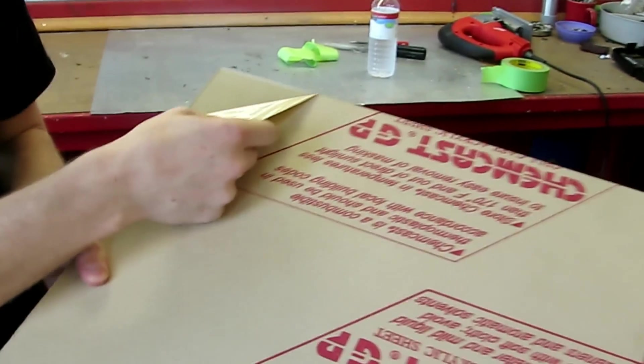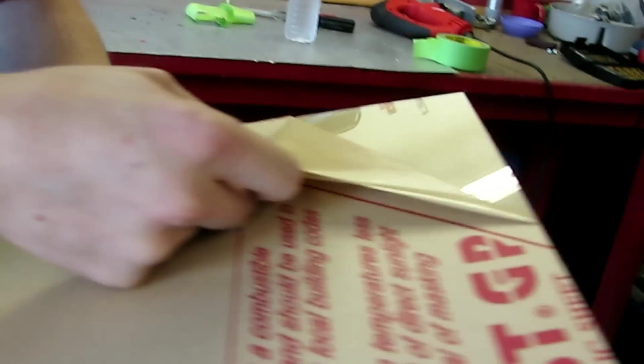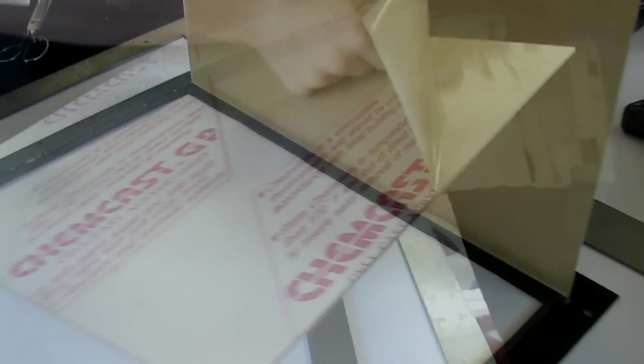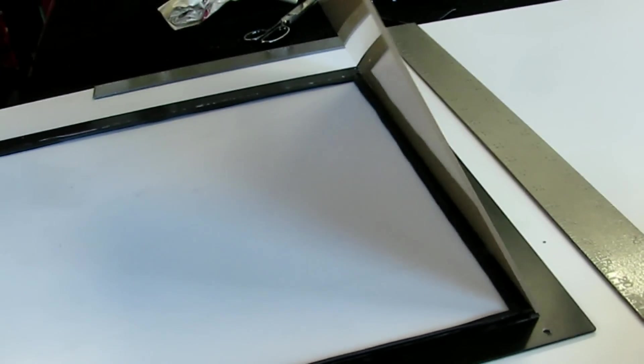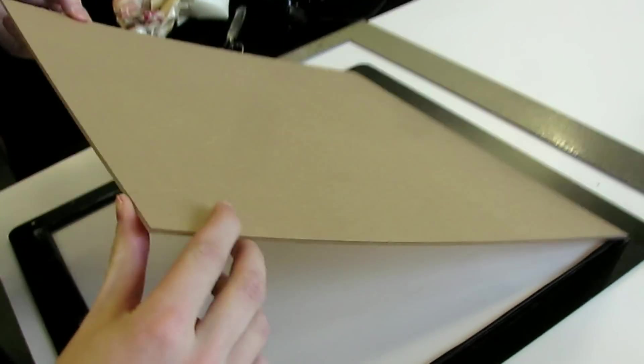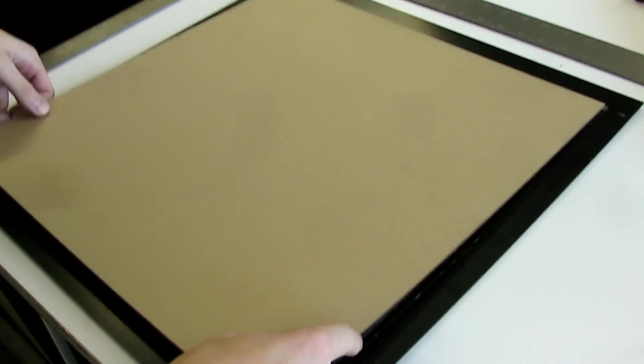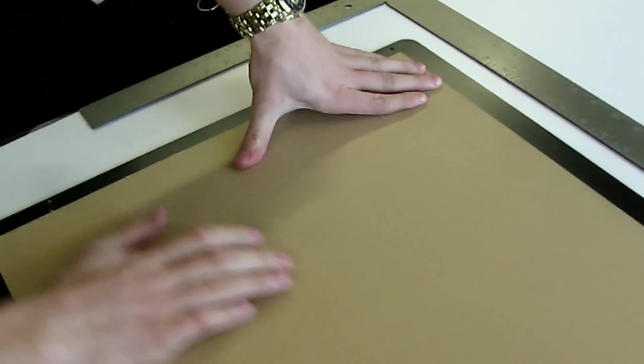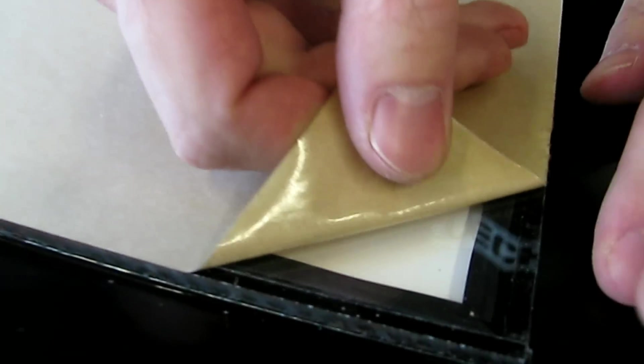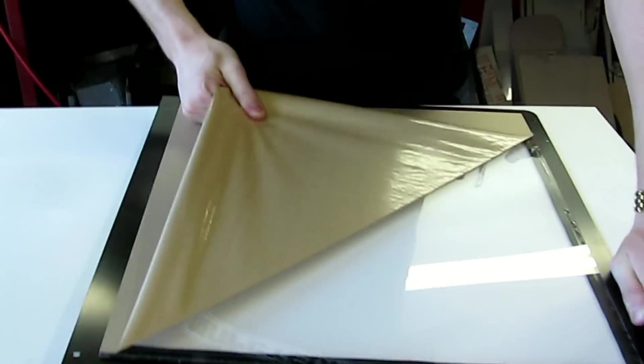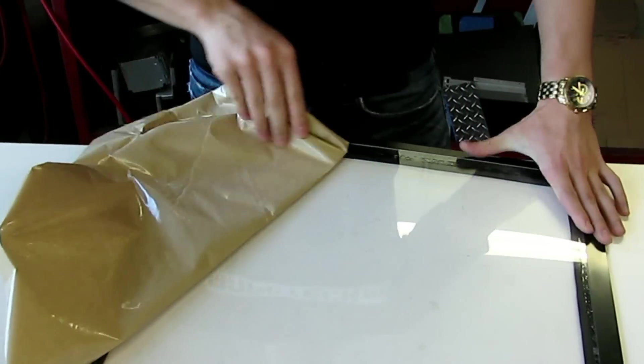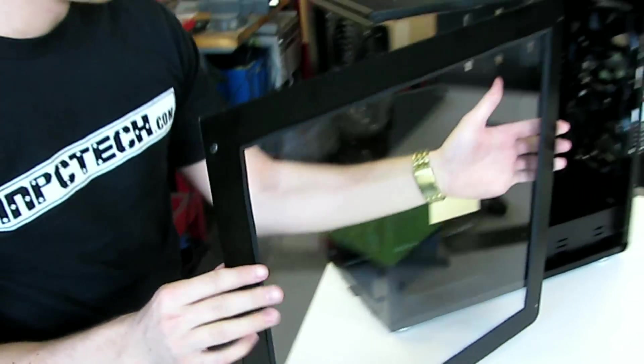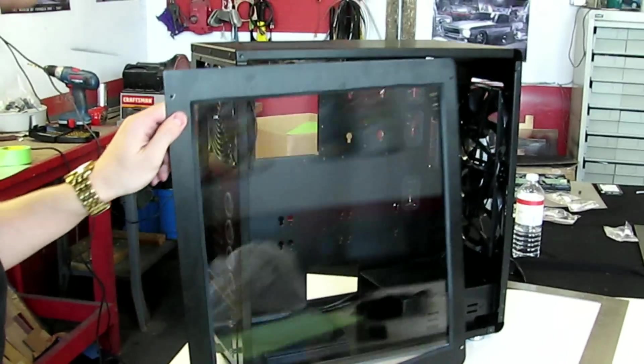Peel off one side of the paper backing on the acrylic. We've got it lined up on the edge, nice and flush here, and then just bring the panel down. Now we can peel off the paper backing at the end. We've got it all set down and it is ready to go onto the side of the case. Window installed, and it looks pretty good.